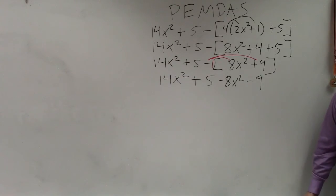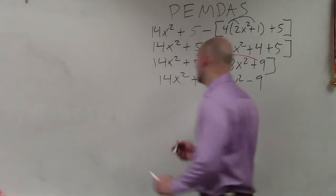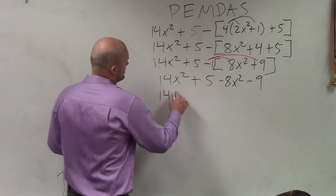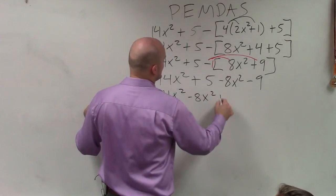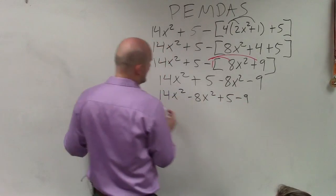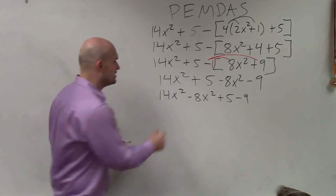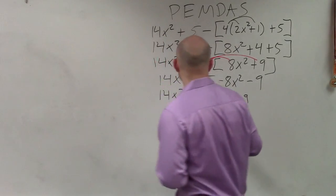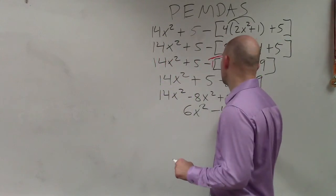And now we just need to make sure—there's no more multiplying and dividing—so we just need to group our terms. So I write 14x squared minus 8x squared plus 5 minus 9. 14x squared minus 8x squared is going to be 6x squared. 5 minus 9 is negative 4.